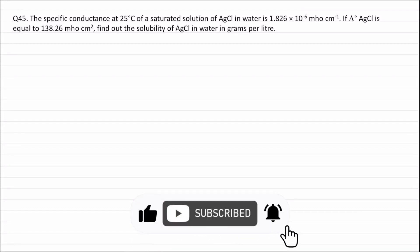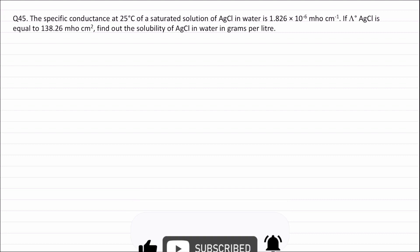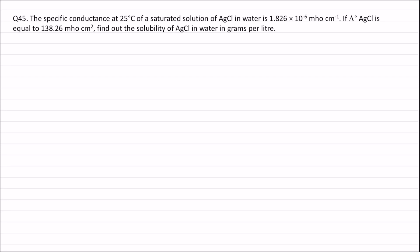Question 45: The specific conductance at 25°C of a saturated solution of silver chloride in water is 1.826 × 10⁻⁶ per ohm per centimeter. If the equivalent conductance at infinite dilution (limiting equivalent conductance) of AgCl is equal to 138.26 per ohm centimeter squared, find out the solubility of AgCl in water in grams per liter.